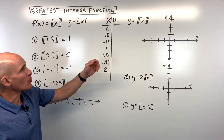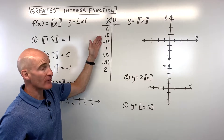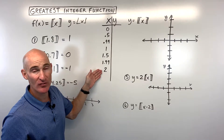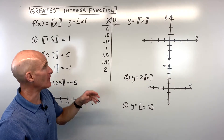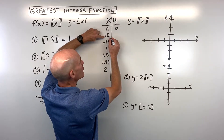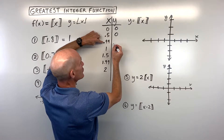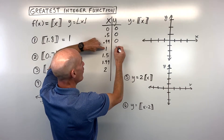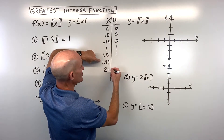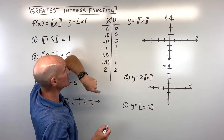Now let's talk about how to actually graph the greatest integer function. What I often do is pick some integer values and some points in between to get an idea of what the graph looks like. For example, if I put in 0, it stays at 0. If I put 0.5 in, that rounds left to 0. 0.99 is 0. Then 1 is an integer value, so it stays at 1. 1.5 rounds left to 1. 1.99 is 1. And 2 stays at 2.